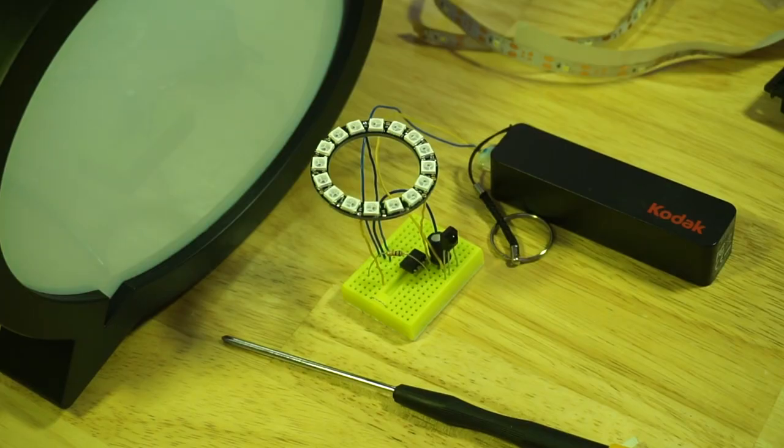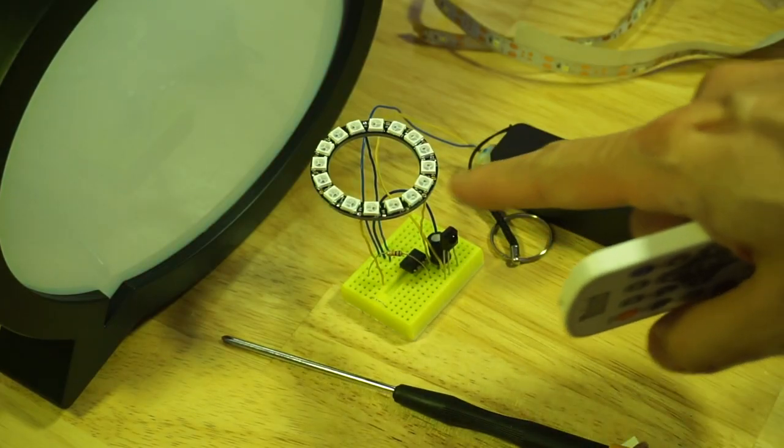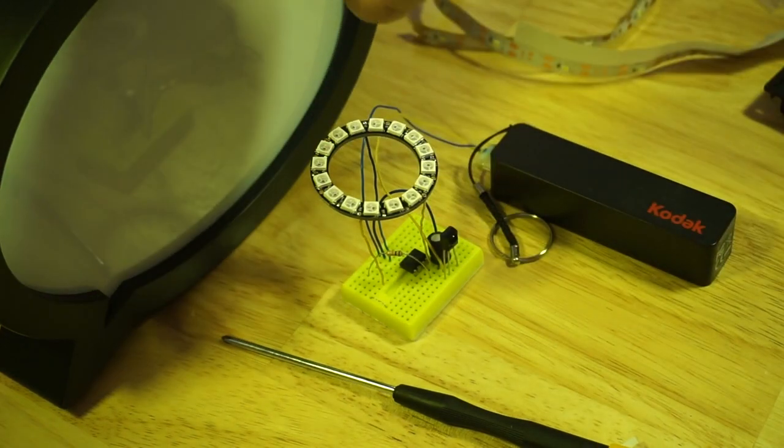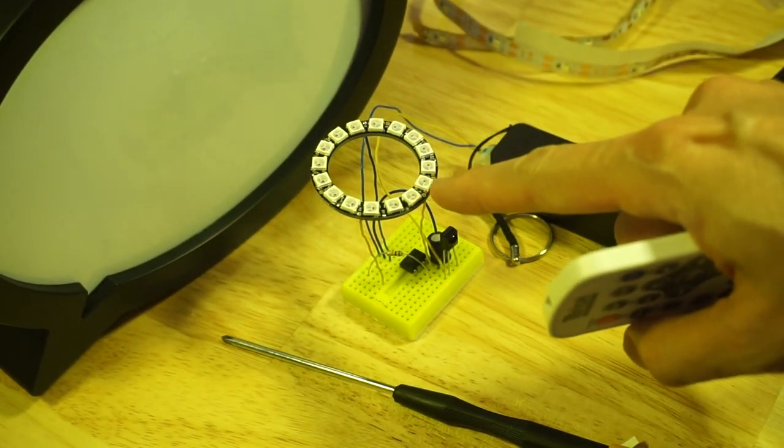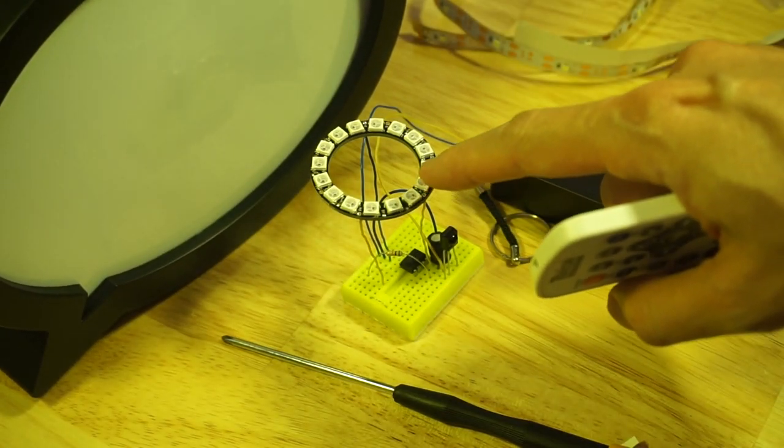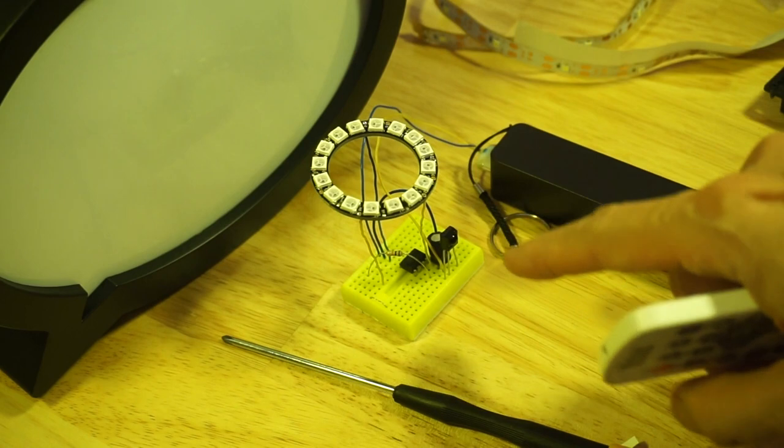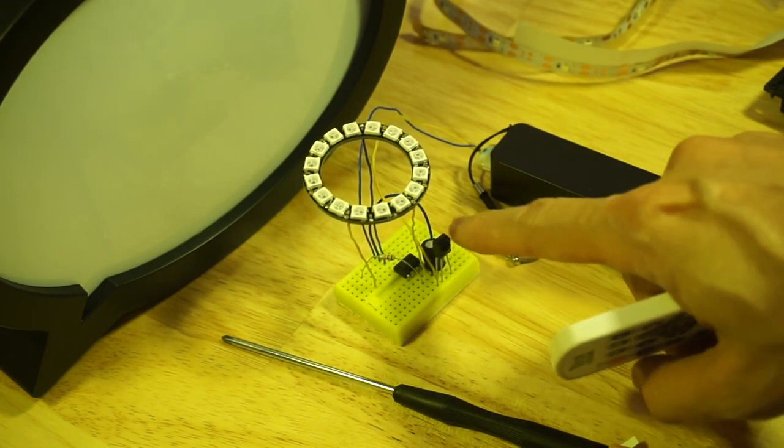And here's the prototype I used while developing the electronics that would replace the illumination for this. This is the Adafruit 16 NeoPixel ring. And here's an IR sensor.